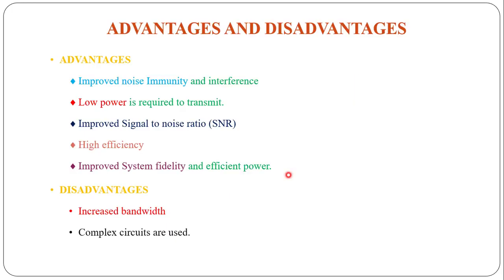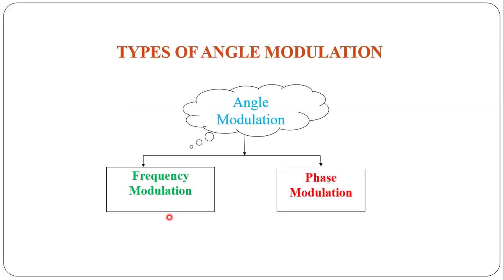The major advantages of angle modulation are very good noise immunity and high efficiency, so the power transmitted is also very low. The major disadvantage is that since the frequency of the carrier signal has to be varied, we require a complex circuit and the bandwidth is also very high.